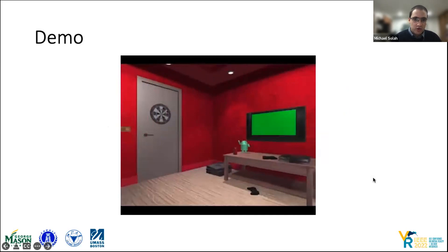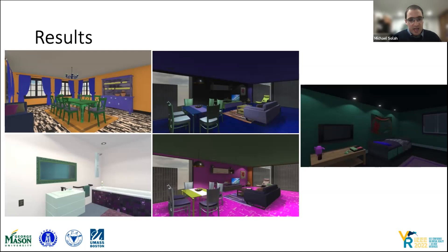Here are some results: a cheerful dining room, a melancholic living room, a scary bedroom, a romantic living room, and a peaceful bathroom. These results were created with a mood weight of 0.7 and a realness weight of 0.3, trying to balance mood-matching and realism.